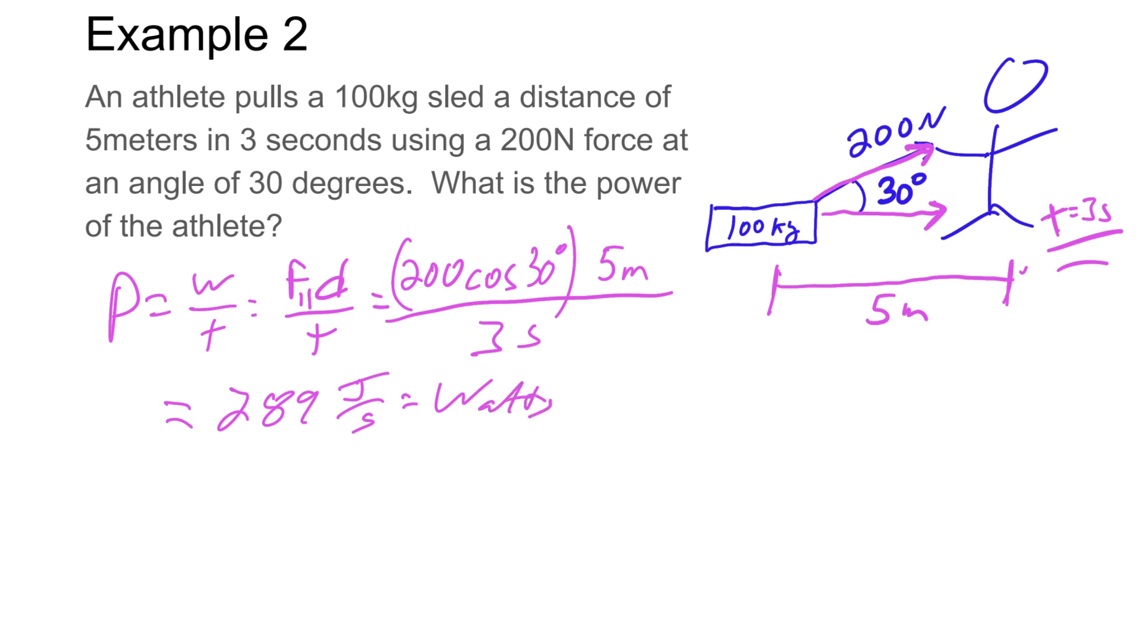For this problem, let's convert to horsepower. Remember, one horsepower is equal to 746 watts. So that means 289 watts, one HP is 746 watts, so we get approximately 0.39 horsepower. So approximately 40% the value of a horse, this person is able to pull the sled at.